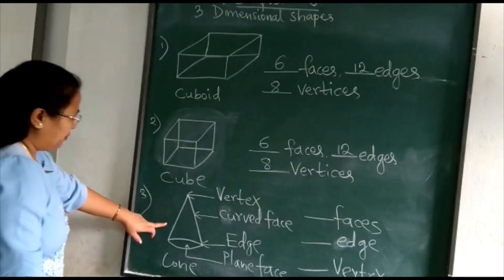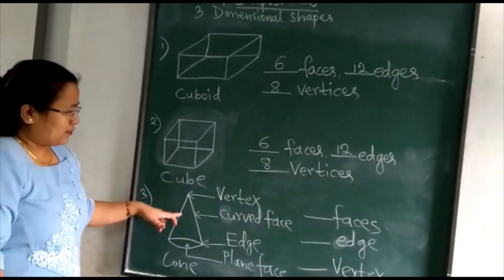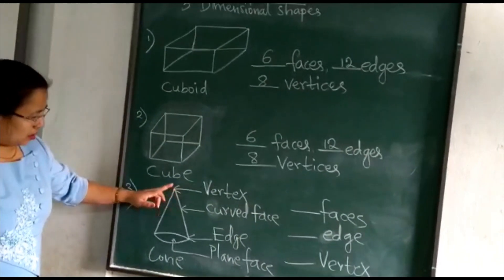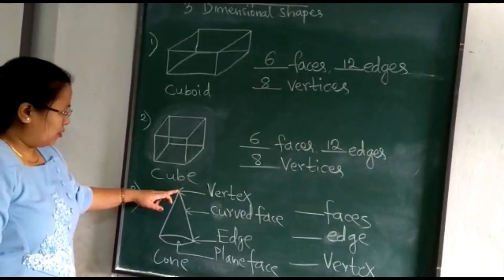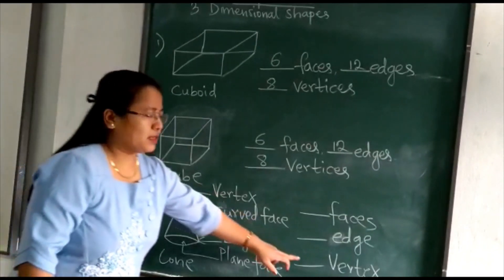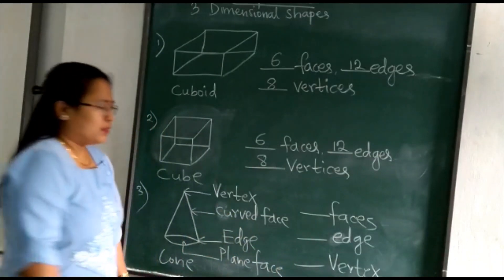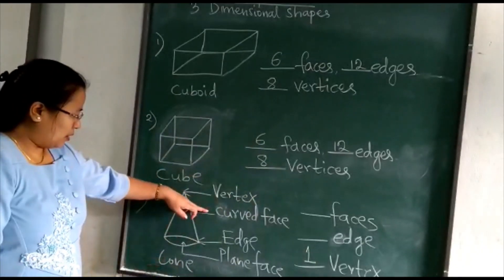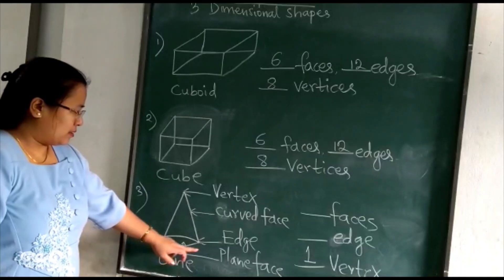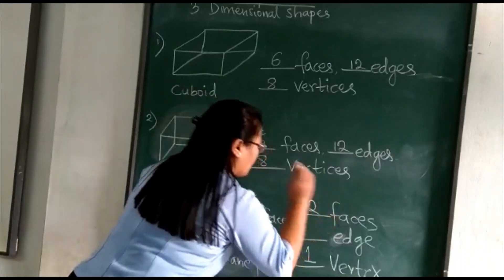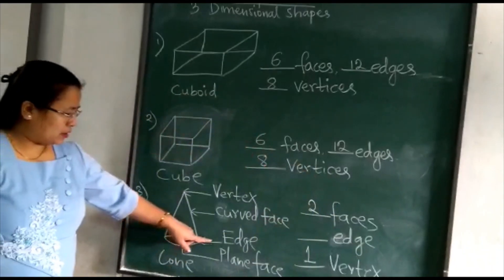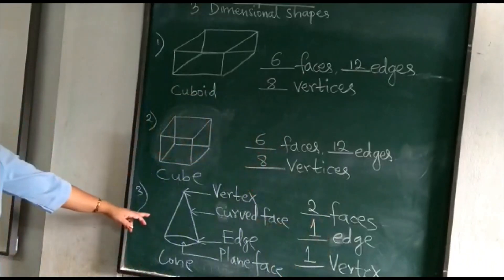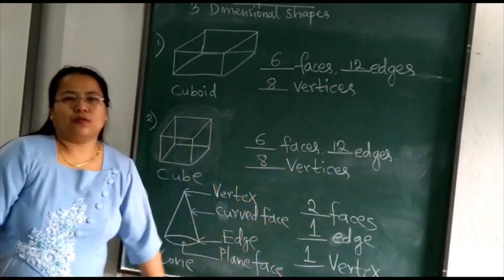Now cone. This is a cone. Let's find out the faces, edges and vertices of a cone. It has only one vertex. The singular form of vertices is vertex, so we write vertex, not vertices. One curved face and one flat face — so it has two faces. A cone has one edge. So a cone has two faces, one edge and one vertex.